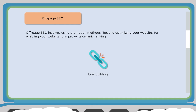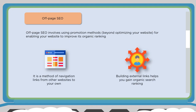Now for off-page SEO, which involves promotional methods beyond optimizing your site. Optimizing your title tag and meta description might not be enough to rank for a coveted keyword query, so we need to do some link building — getting our name out there on other websites. We need to establish external links or backlinks from high-quality, relevant sites to our site. Google also recognizes linkless backlinks, so just having a reference on a high-quality site may be enough to become more relevant in Google's eyes.